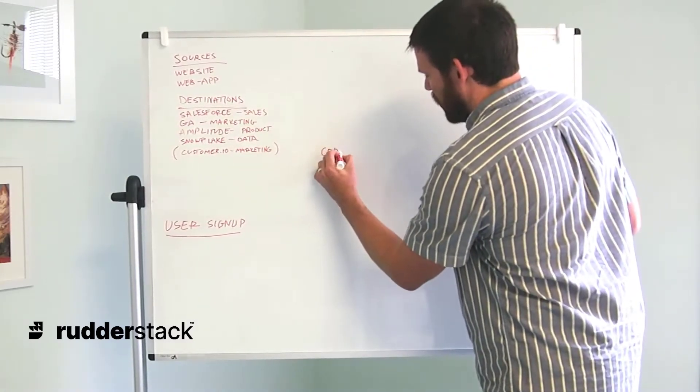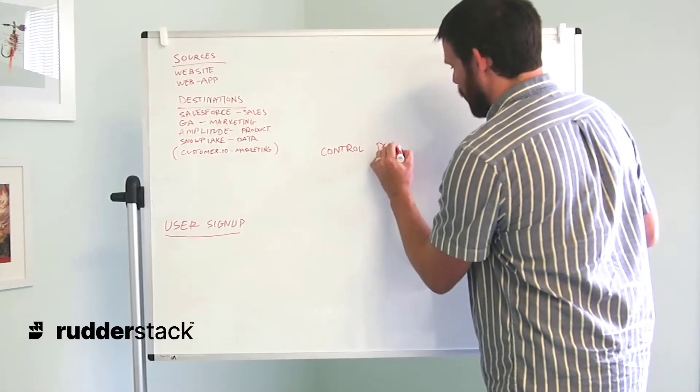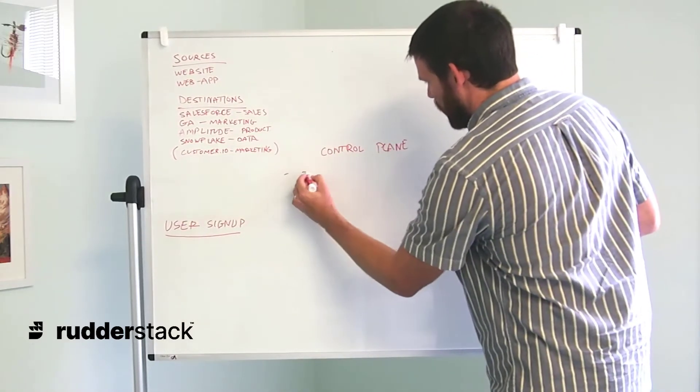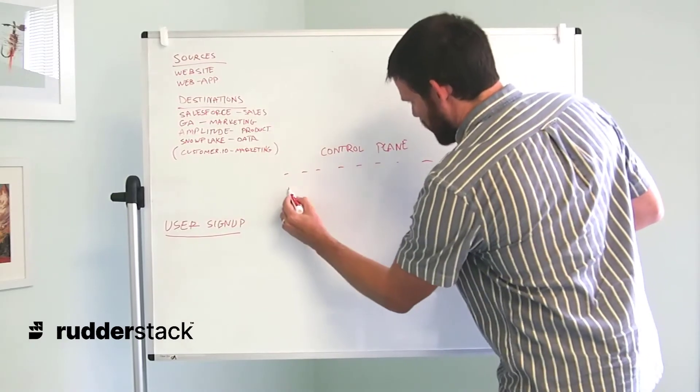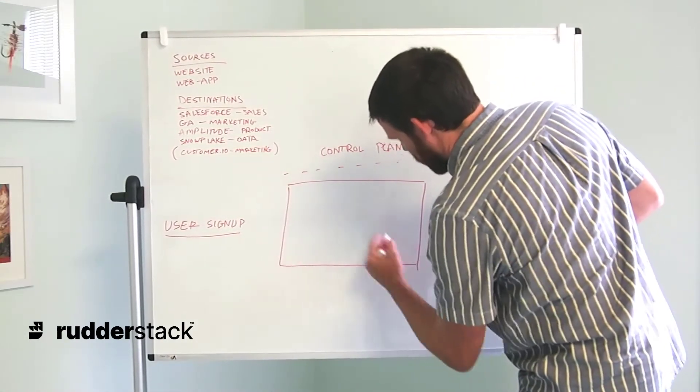We have our control plane, and this is where we're going to set up all of our pipelines. Our control plane is going to be completely separated from our data plane, which is where our data is processed.